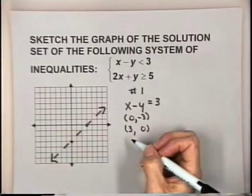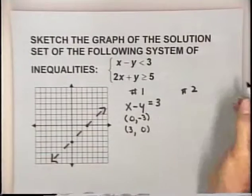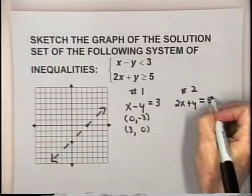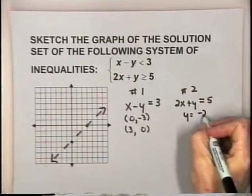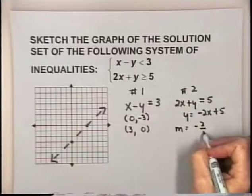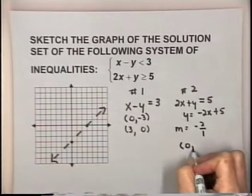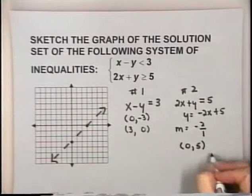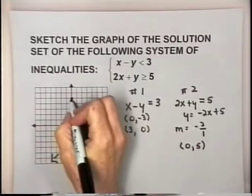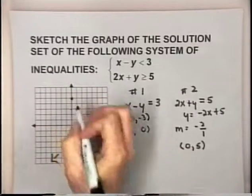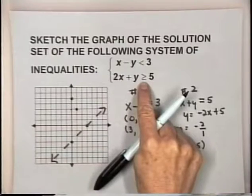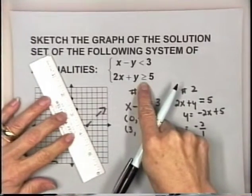For inequality number two, the corresponding equation is 2x plus y equals 5. Solving for y: y equals negative 2x plus 5. The slope is negative 2 and the y-intercept is 5, so we locate the point (0, 5) and go down 2, to the right 1. This inequality includes equals, so we make a solid boundary line. With the two boundary lines, we now have four distinct regions in the coordinate plane.